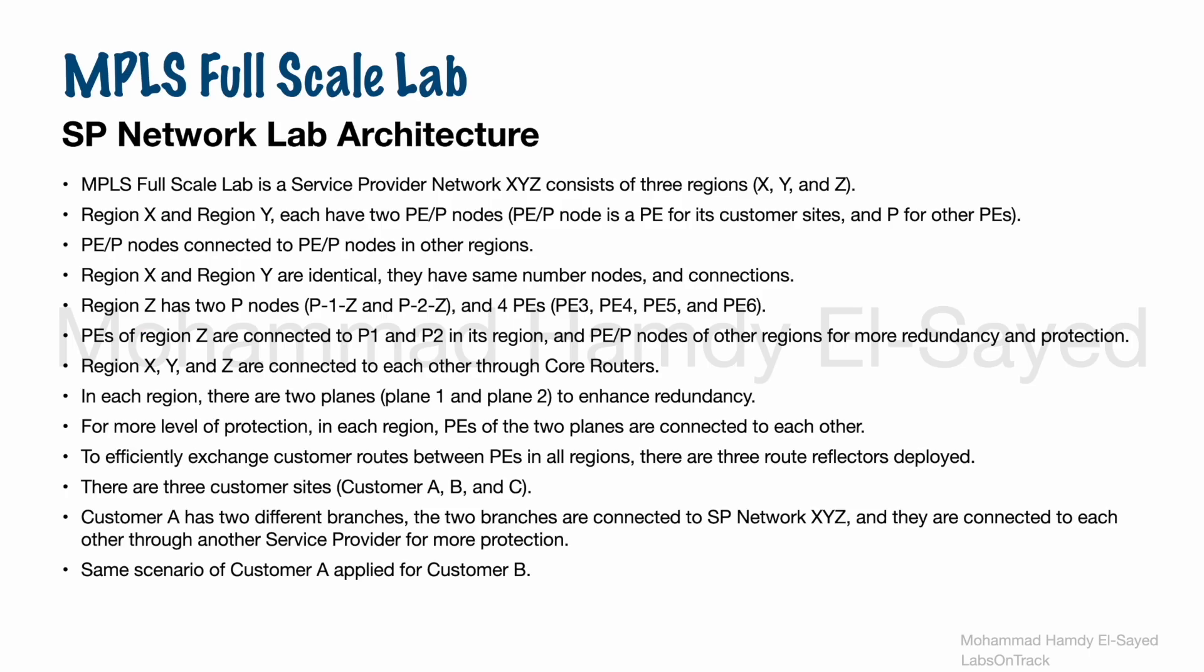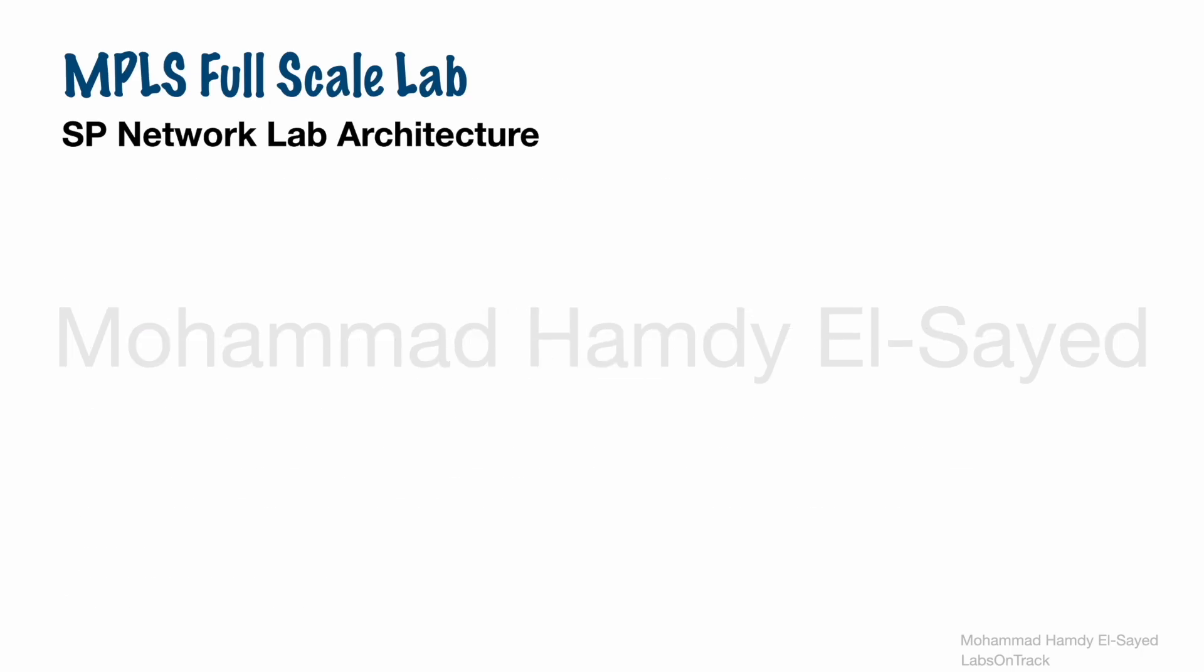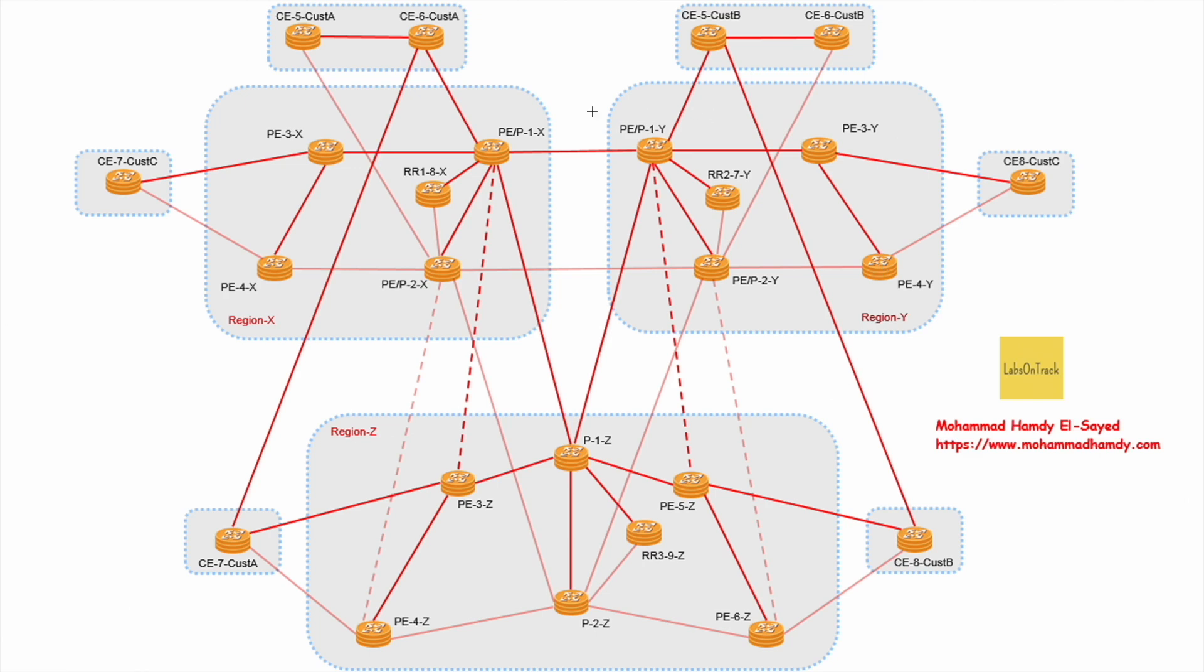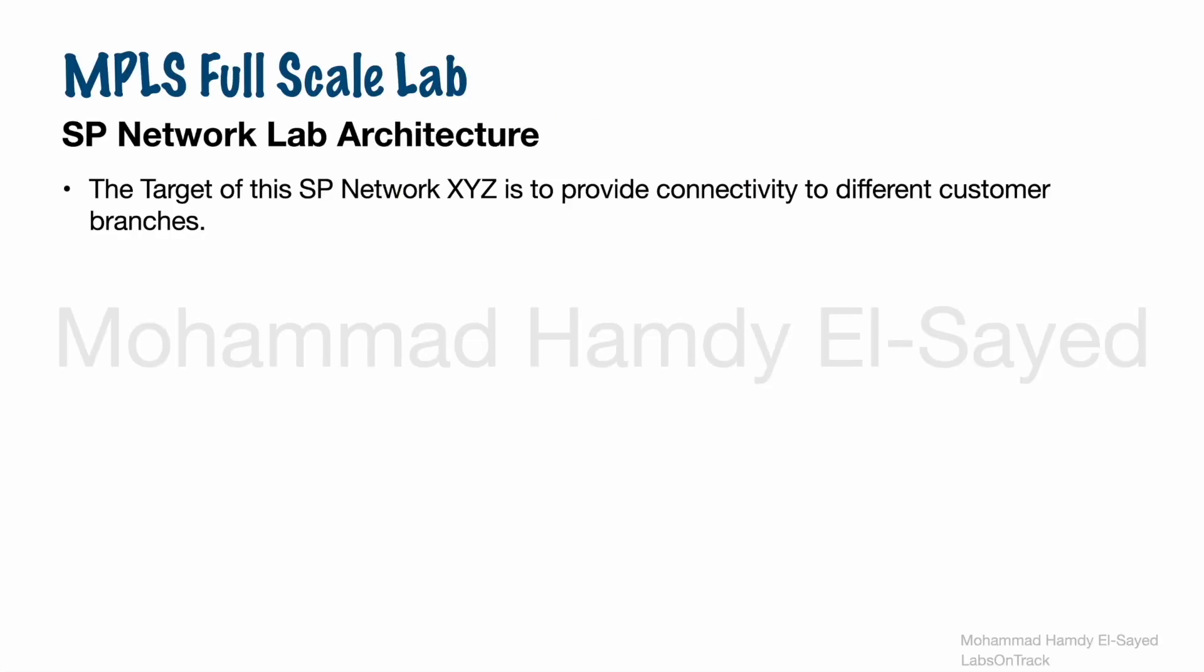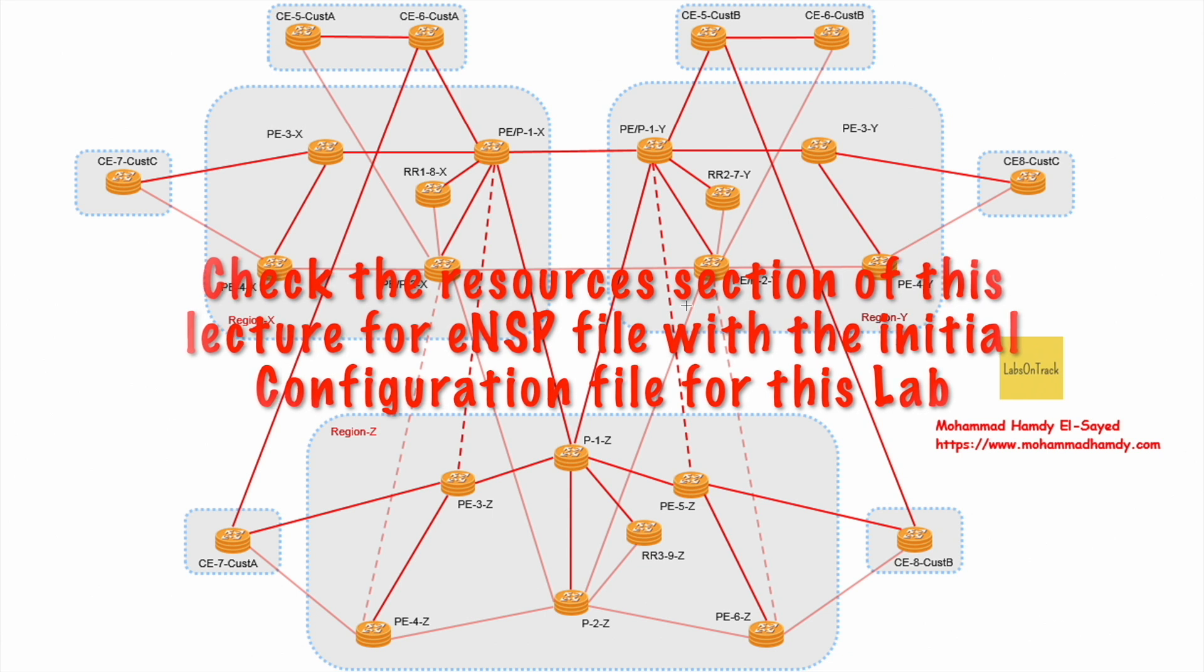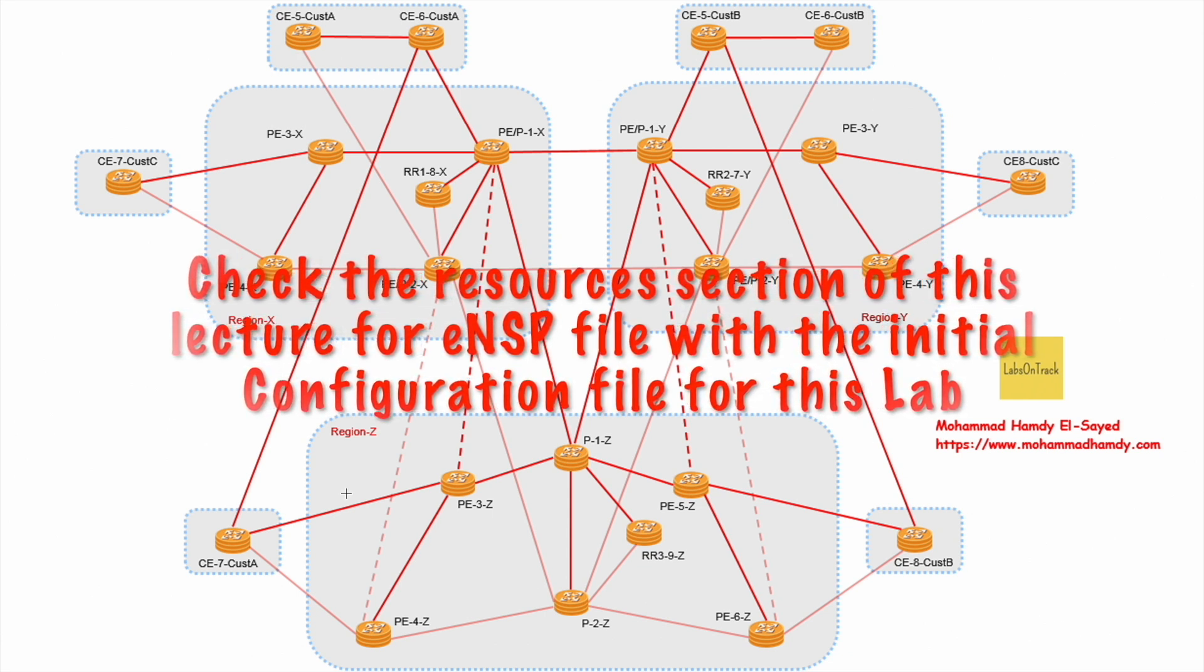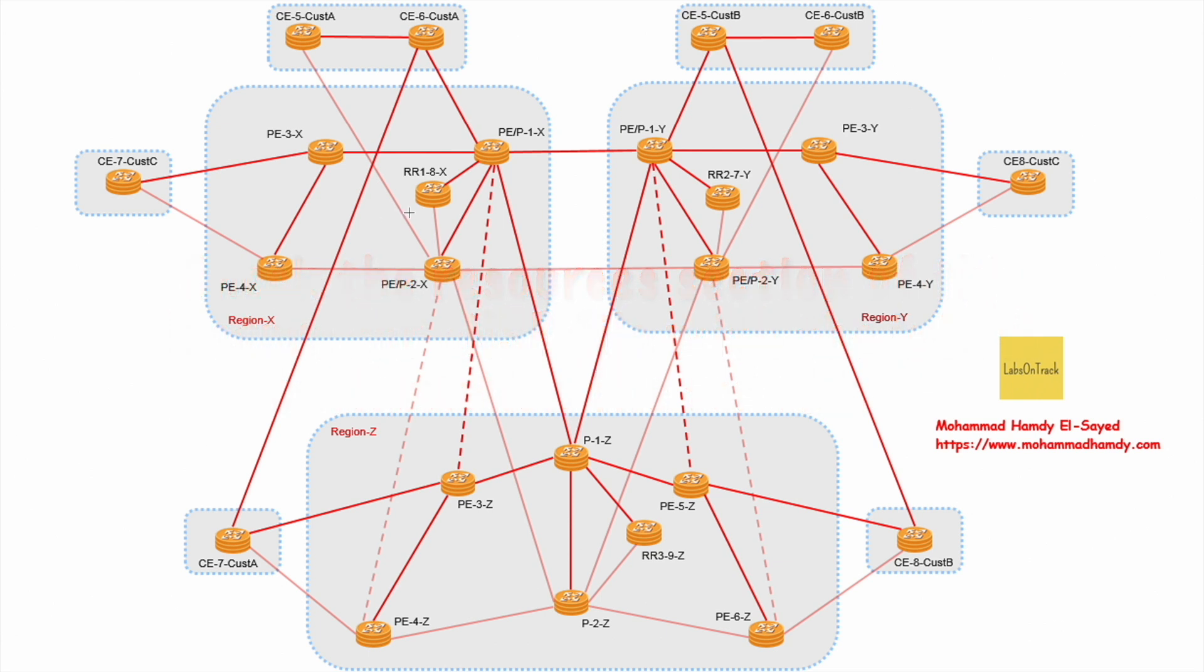Customer C has two separate geographical sites as well, and they are connected to region X and region Y. The target of this service provider, service provider XYZ, is to provide connectivity for different customer branches. The ENS P file for this lab with the initial configuration files for all these routers are uploaded in the resources section of this lecture.